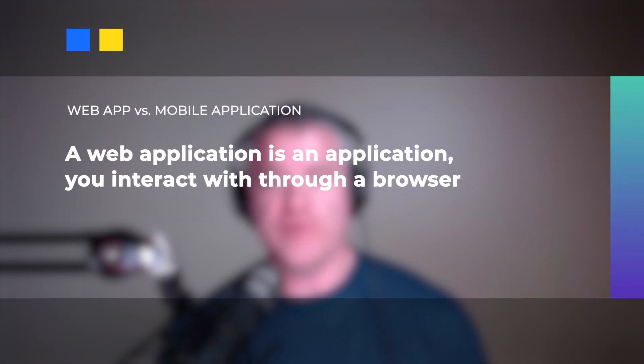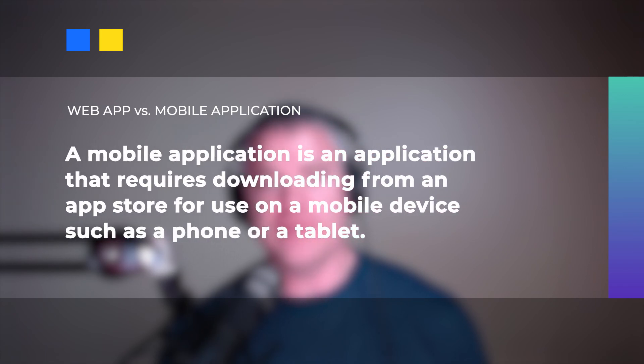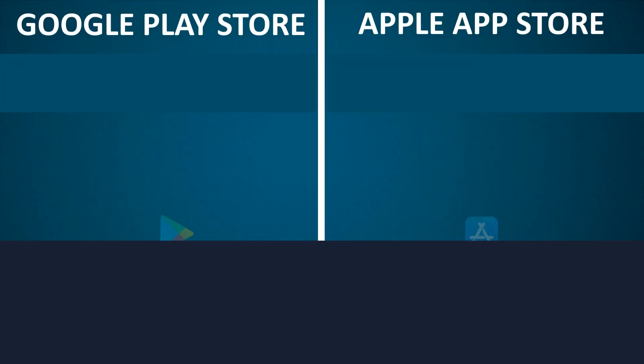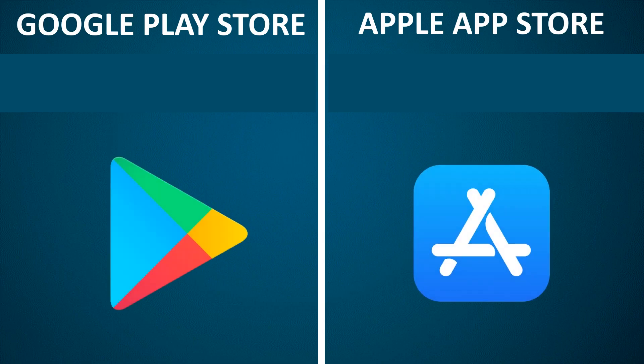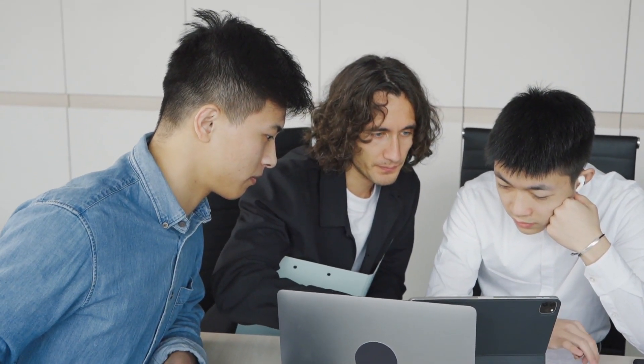To simplify: a web application is an application you interact with on the internet through a web browser, whereas a mobile application is an application that requires downloading from an app store for use on a mobile device such as a phone or tablet. Mobile apps require downloading from the App Store for Apple iOS devices and Google Play for Android devices. They also require development in programming languages and frameworks separate from web applications, so there is an added burden for businesses when deciding to build mobile applications.